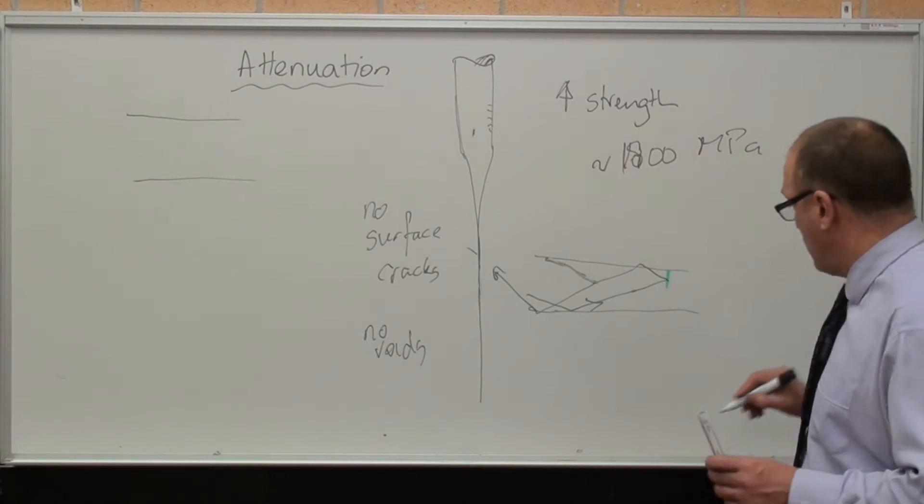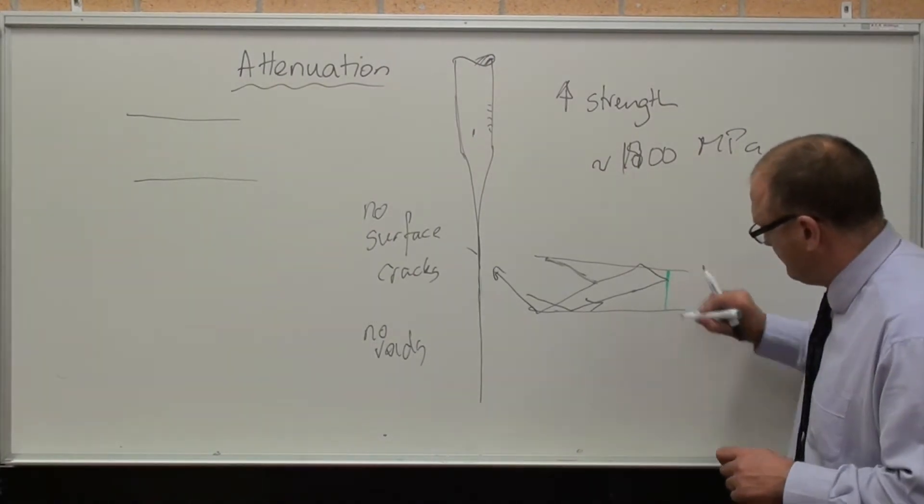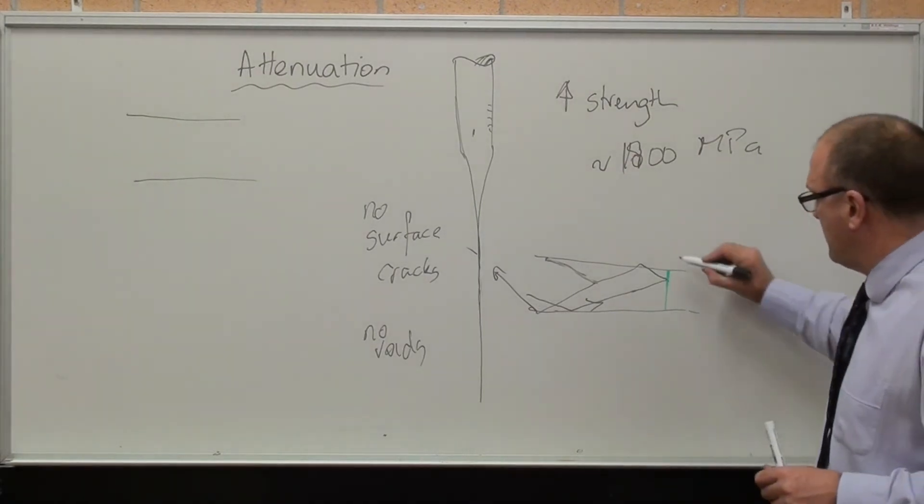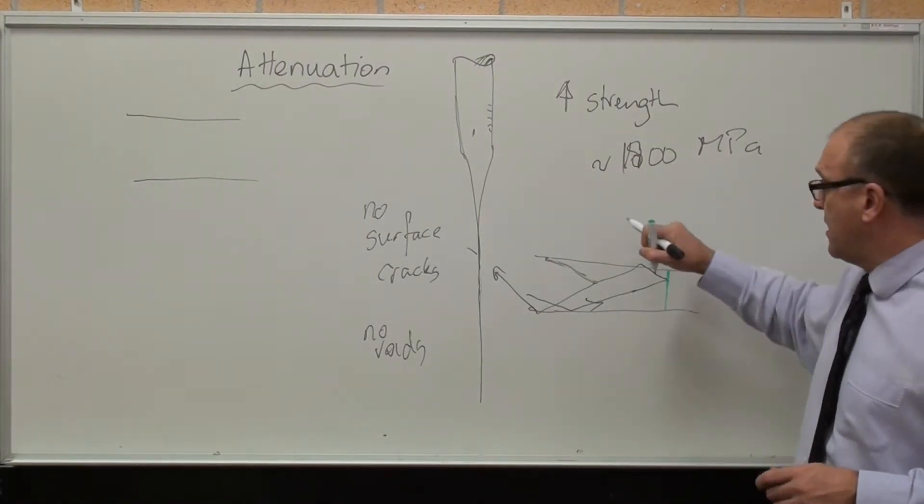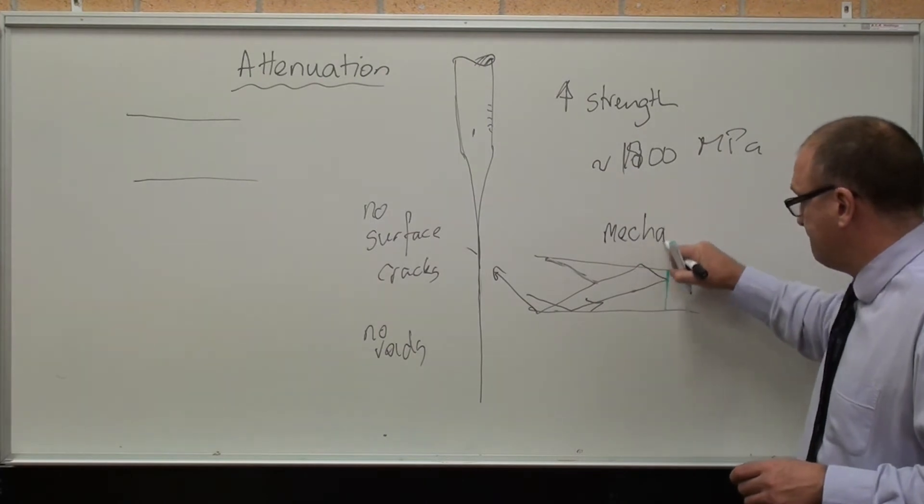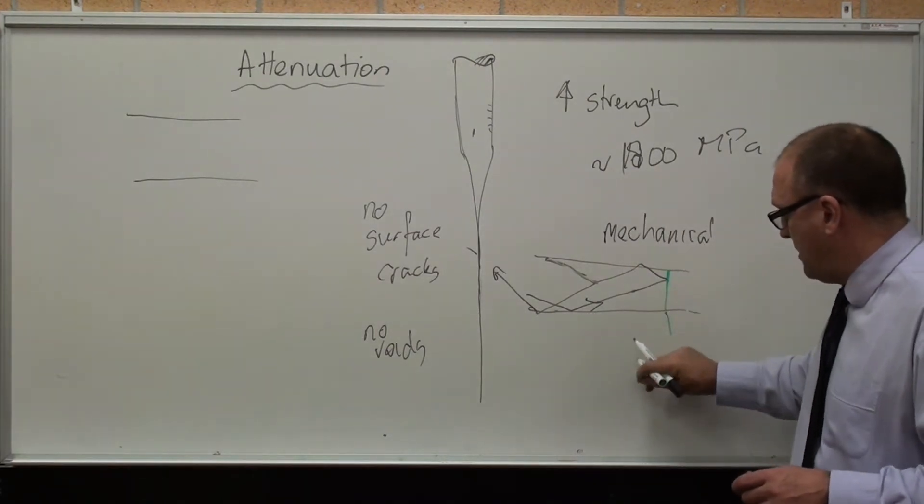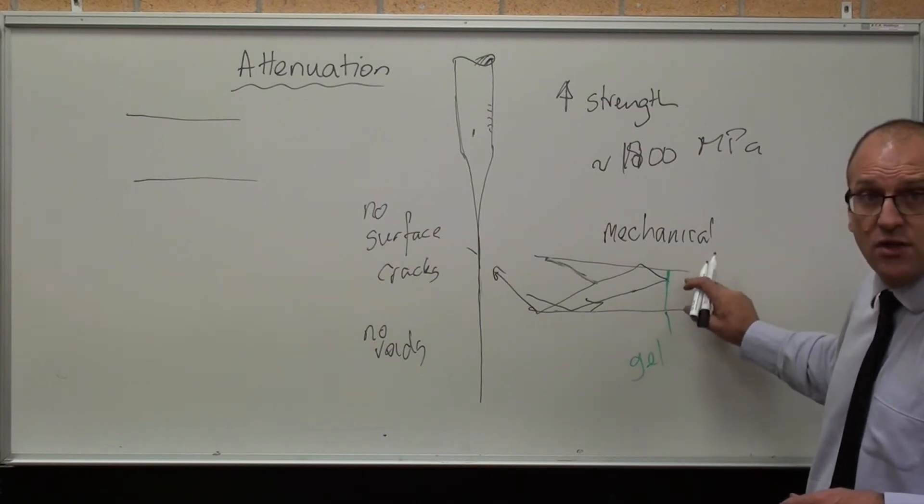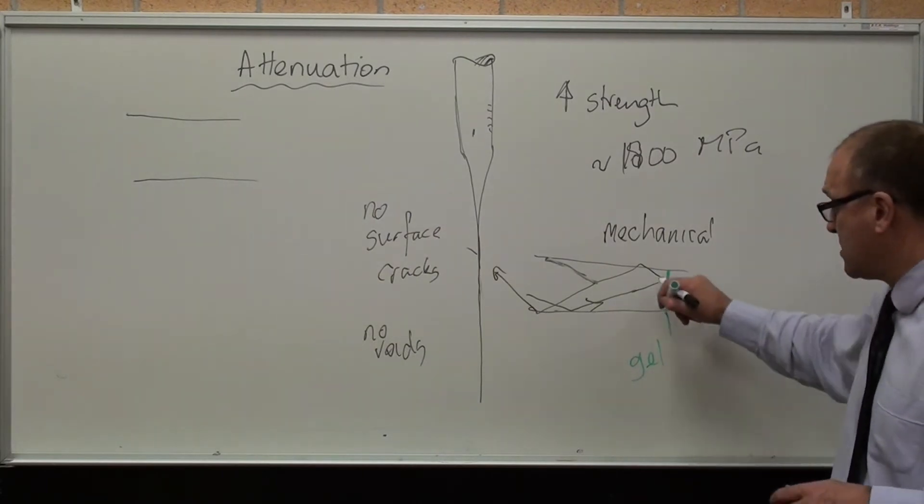When it gets to a joint, of course, that joint's got to be invisible to the light. So there's two ways they do it. The mechanical joint, they have a gel in there that has an identical refractive index to the core of the cable, so the light just passes through it.